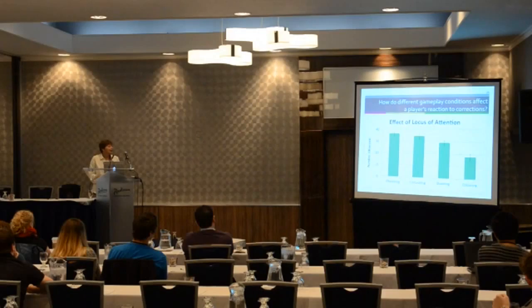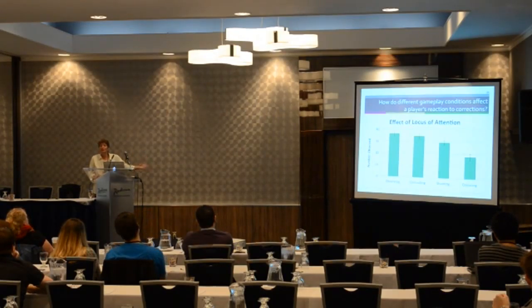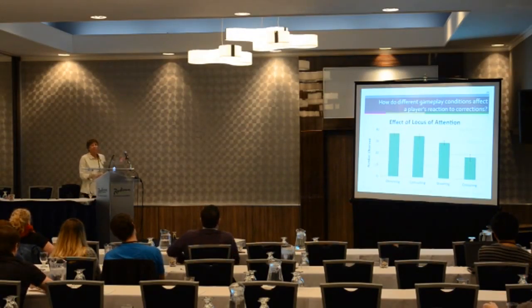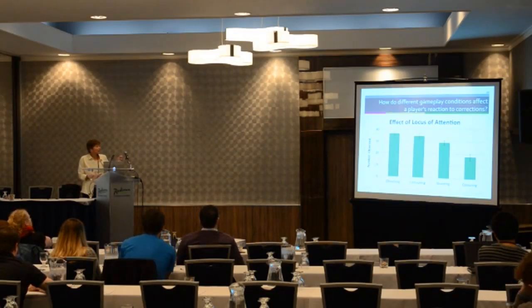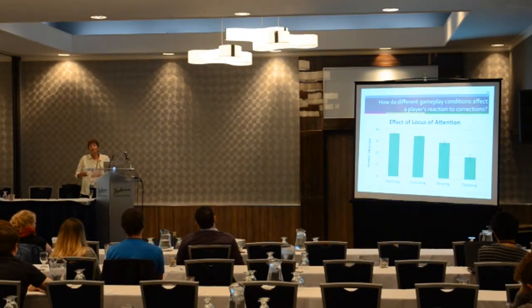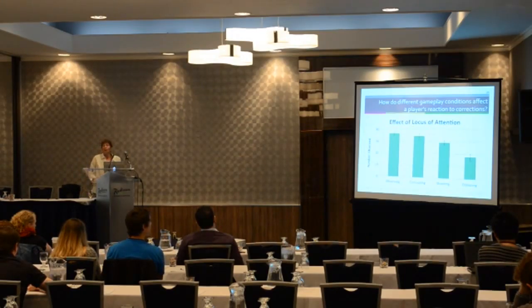Going from most attention to least attention across conditions — controlling and observing, then shooting, then coloring — players noticed almost twice as many corrections when they were paying full attention compared to when the correction was occurring in their periphery. This seemed to be a really important factor in how many corrections people detected.